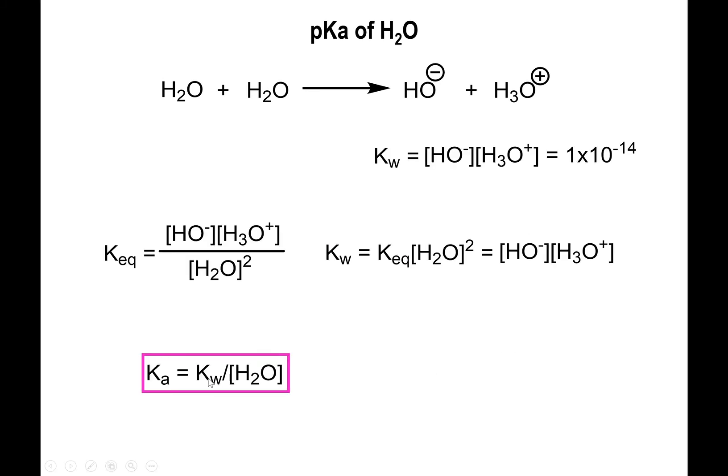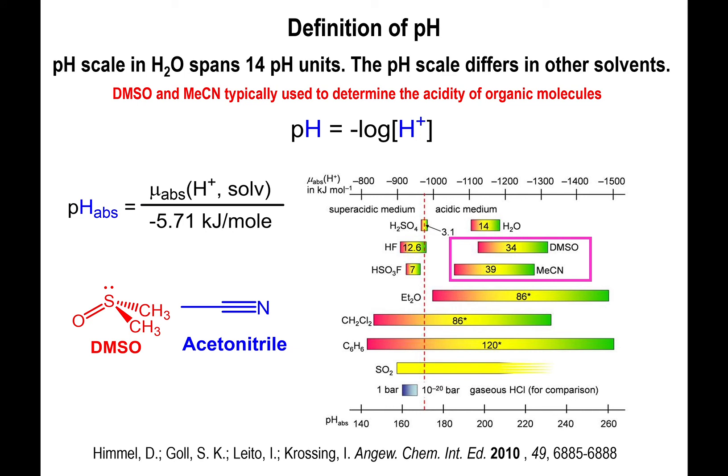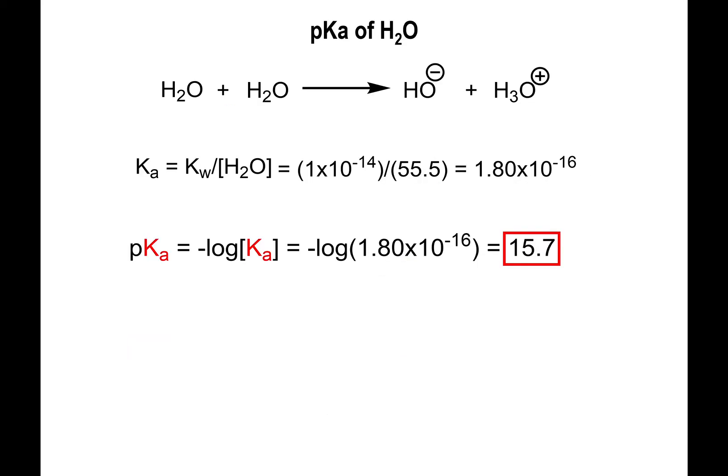Dividing kW by 55.5 gives us a value of 1.8 times 10 to the negative 16, which is the Ka. Take the negative log of that value—negative log of 1.8 times 10 to the negative 16—and you get the actual pKa of water, 15.7. This is the true pKa of water, and now you've seen the derivation to that value. With that information in mind, now we have a basis for comparing things. Water is neutral from our point of view, meaning it's not really acidic or basic. That's going to represent our neutral ground, and its pKa is 15.7.